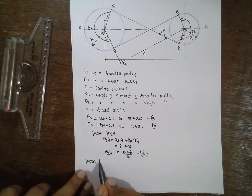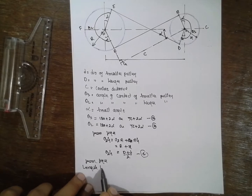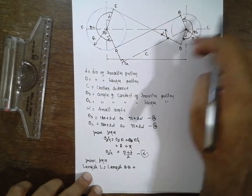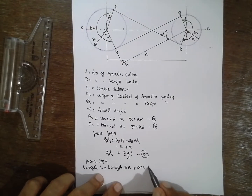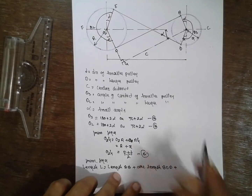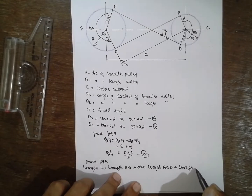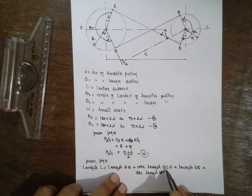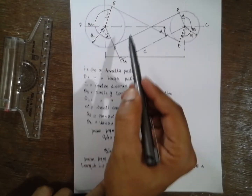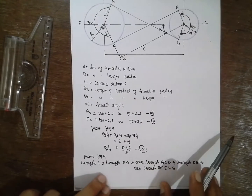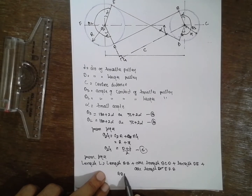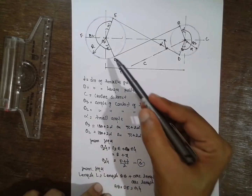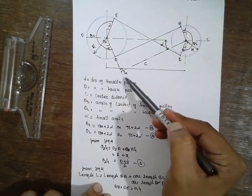From the figure, the total belt length L is nothing but: length AB plus arc length BCD plus length DE plus arc length EFA. As per the diagram, AB is equal to DE, and DE is also equal to O1G.